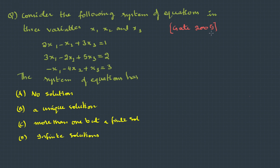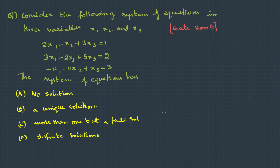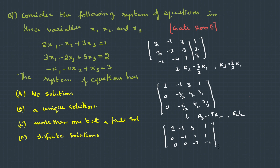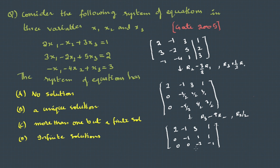Here we have a question from GATE 2005. Consider a system of equations in three variables x1, x2, and x3. The options are: no solution, unique solution, more than one but finite solutions, or infinite solutions. Using the Gauss-Jordan approach, we write the augmented matrix and apply row transformations. After the transformations, the lower triangle becomes zero but the last element is not zero, so the coefficient matrix rank is three and the augmented matrix rank is also three. Since these are equal and equal to the number of variables, it has a unique solution — option B is correct.